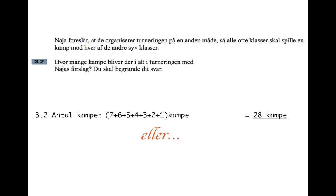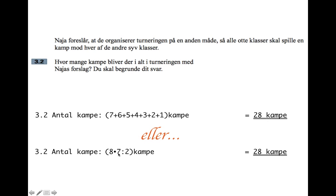There is another way you can look at this. You can say there are eight teams and they've each got to play seven other teams, so eight times seven. But then if we have team A against team B, that's the same as having team B against team A, so we don't want to count all those pairs twice — for that reason we divide by two. So seven times eight divided by two is another way of getting 28.